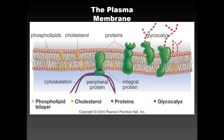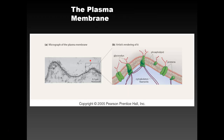You have proteins embedded in the membrane. This is called an integral protein because it is integrated into the plasma membrane. You have peripheral proteins because they're kind of in the periphery — they don't go all the way through. And you have these glycocalyx things which are attached to proteins and have various functions in bacteria. Here's a micrograph of a plasma membrane and an artist's rendering with some of the same details.